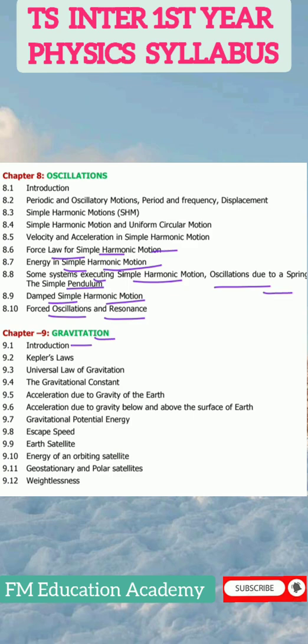Chapter 9, Gravitation: Introduction, Kepler's law, universal law of gravitation, the gravitational constant, acceleration due to gravity of Earth, acceleration due to gravity below and above the surface of Earth, gravitational potential energy, escape speed, Earth satellite, energy of an orbiting satellite, geostationary and polar satellites, and weightlessness.